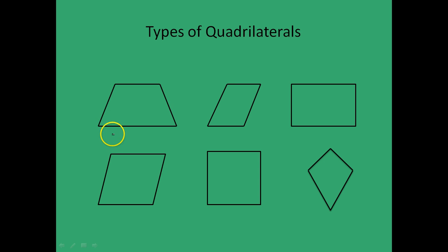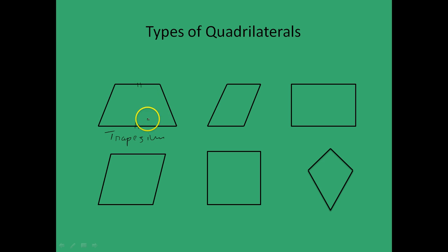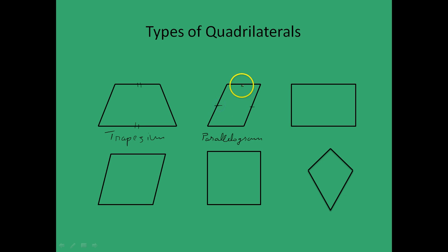The first one is called a trapezium, which has two parallel sides. Next is a parallelogram, where these two sides are parallel and equal, and these two sides are also parallel and equal.